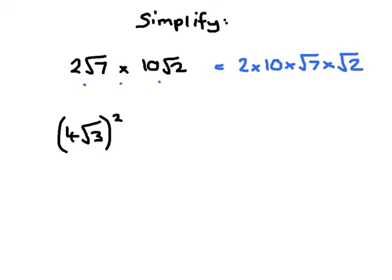I've just slightly reordered it. To sort this out, 2 times by 10 is 20. And then the square root of 7 times by the square root of 2 will be the square root of 14. And I can't simplify that any further, so we'll leave it like that.